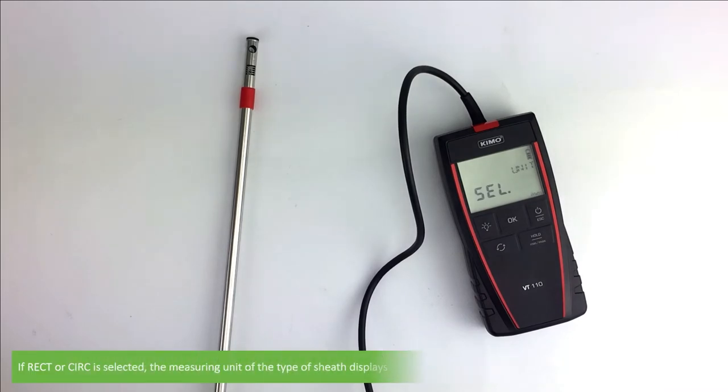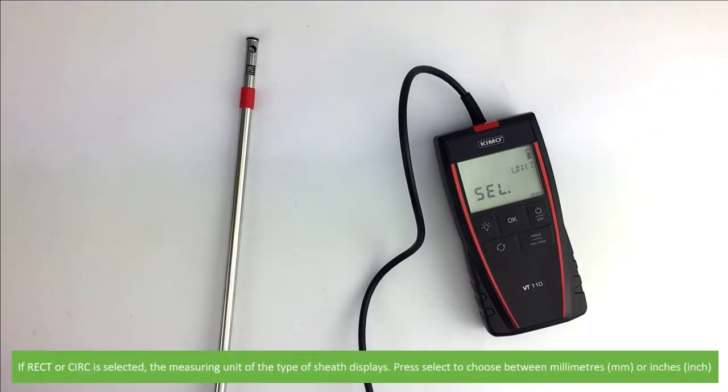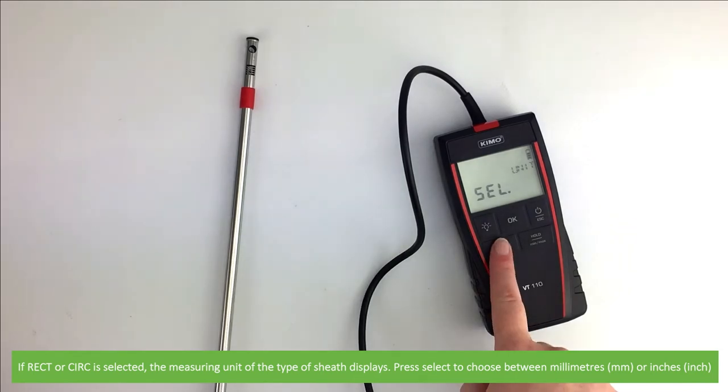If rectangular or circular is selected, the measuring unit of the type of duct displays. Press select to choose between millimeters or inches.